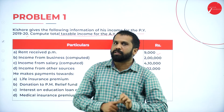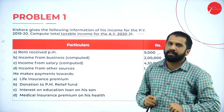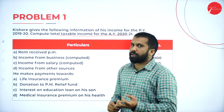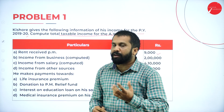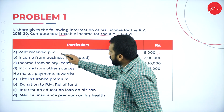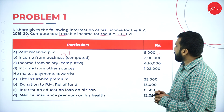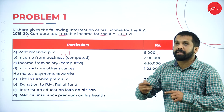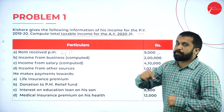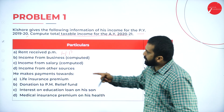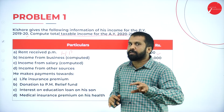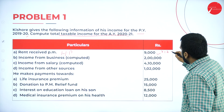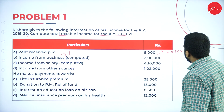Now as per this, we will go for income from salary first. Rent received — whatever rent received — comes under income from house property. Should we take this 9,000 directly? No. This is 9,000 per month, so we are supposed to calculate per annum. They have not given the word 'computed', so we need to calculate: 9,000 into 12, you will get 1,08,000.